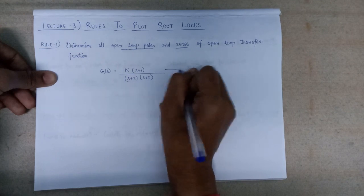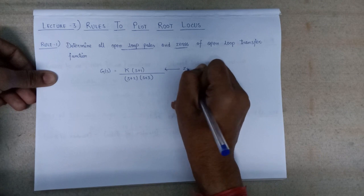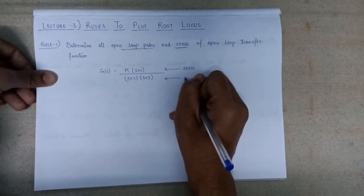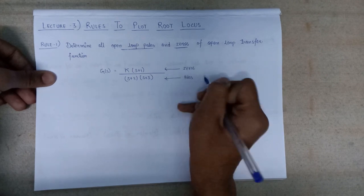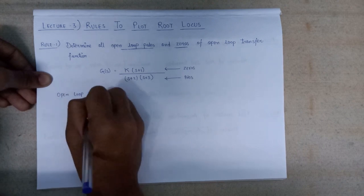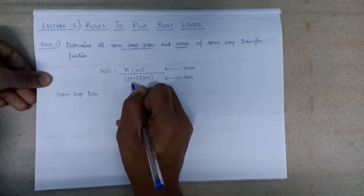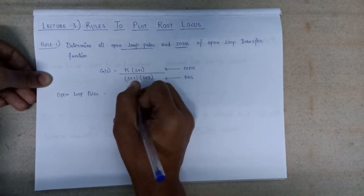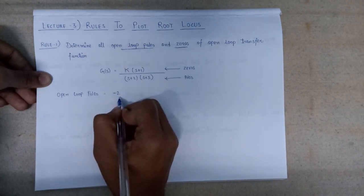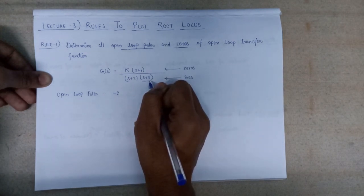By equating the numerator part to zero we will get open loop zeros, and by equating the denominator part to zero we will get open loop poles. So the open loop poles are found by equating (s+2)=0, giving s=-2, and (s+3)=0, giving s=-3.